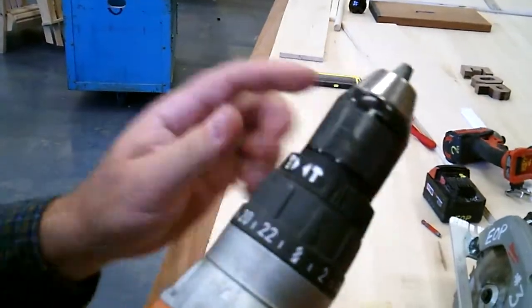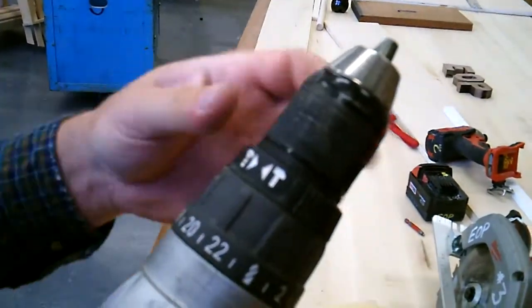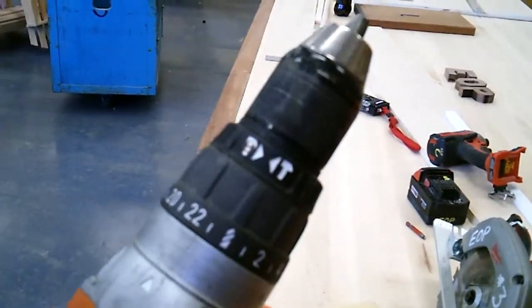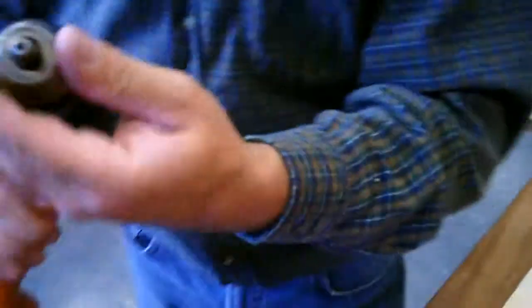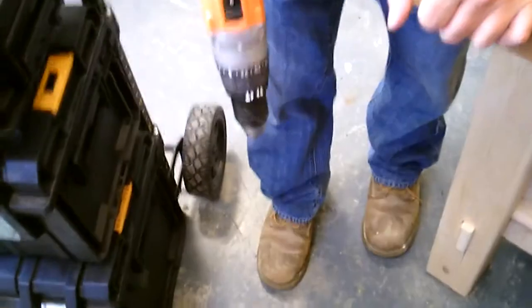Right here, if we want it to be a hammer drill, we would turn it to the hammer. If we turn it, it's not a hammer drill, it's just a regular drill driver. This one here, you can actually put a concrete drill bit inside the drill, and you can drill it right into the concrete.